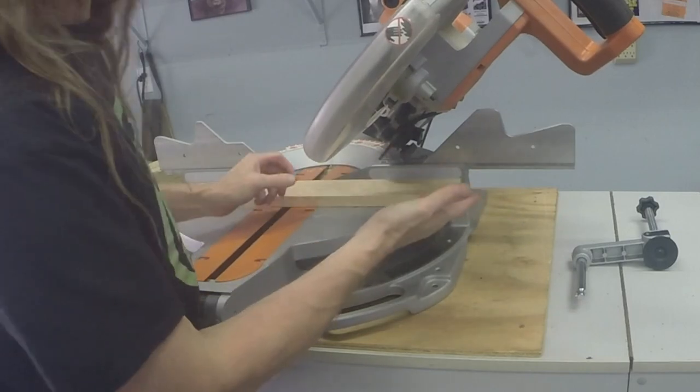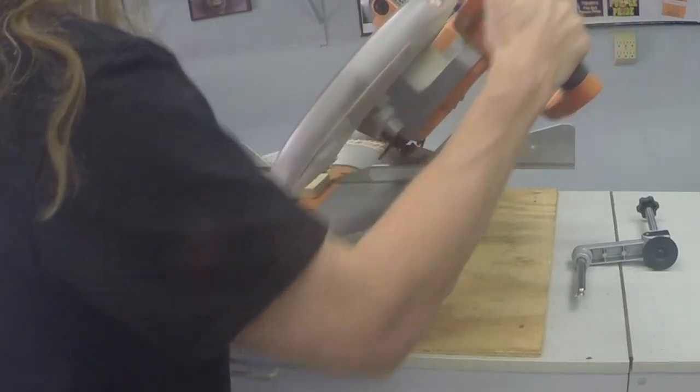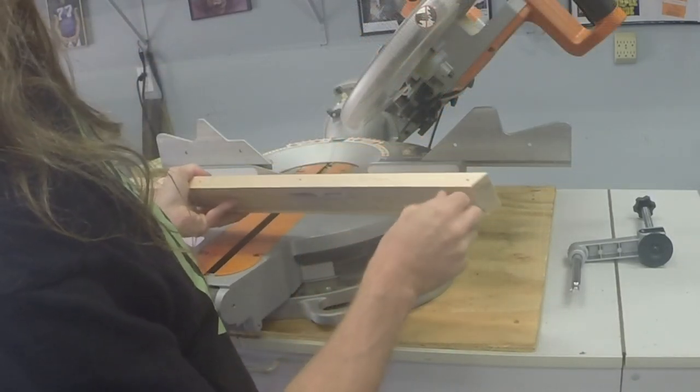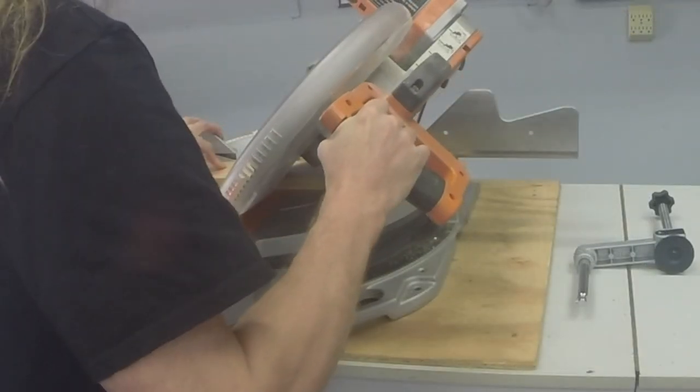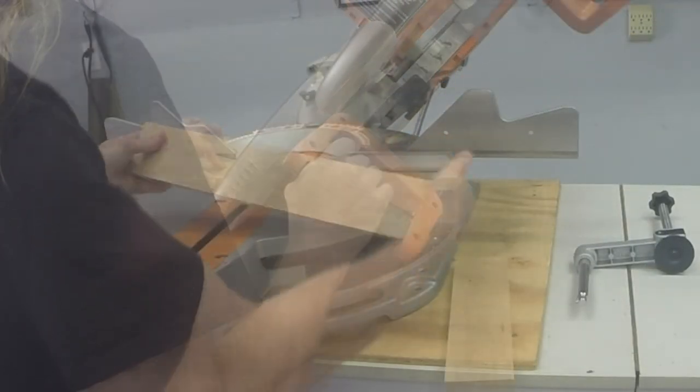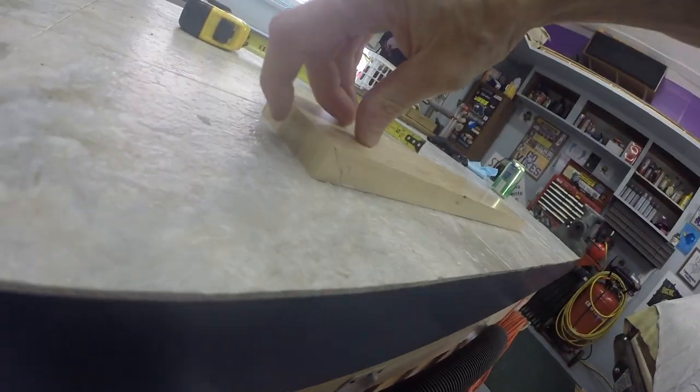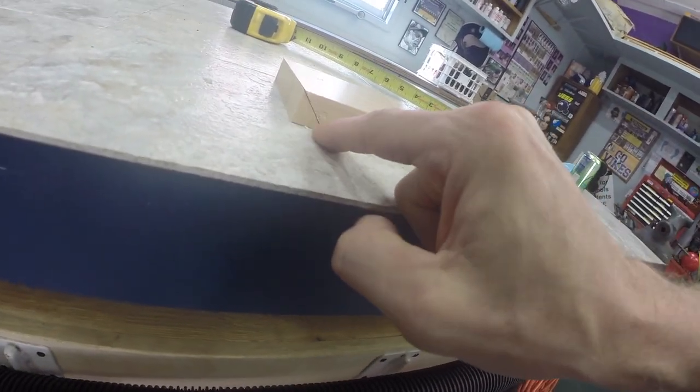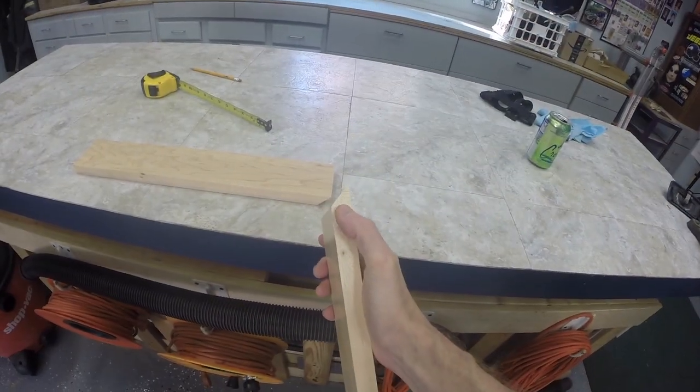So I have my compound miter saw at 45 degrees. I'm just gonna cut this guy. Now I'm gonna measure 18 inches here. All right, so now you can see that it's finished here, and then it's finished here because all I did was I made a 45 cut and then I cut it flush. So I'm gonna do the same thing on this side.